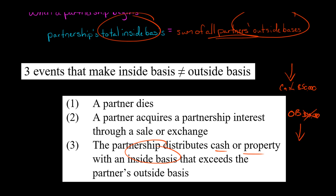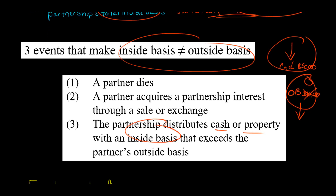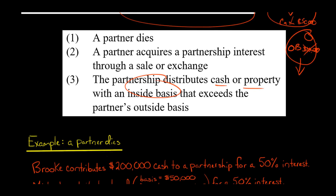Why? Because the outside basis just goes to zero, since a partner's outside basis cannot be negative. So basically, if you distribute assets with a basis that exceeds the outside basis of the partner, you're going to have a difference between the total inside basis and total outside basis of all the partners.